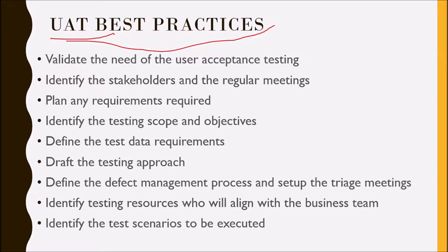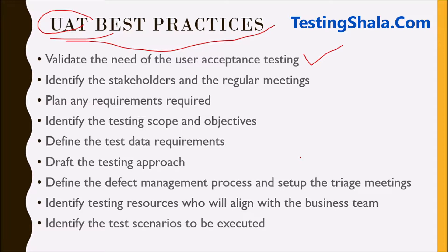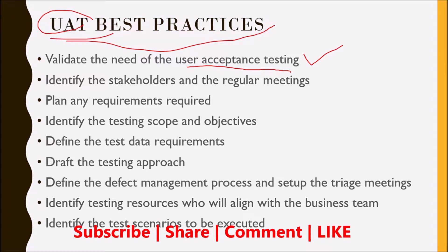The first best practice is we need to validate the need for user acceptance testing. Not every project requires UAT. It needs to be validated with the stakeholders — end users, business users, or product management — to confirm whether there is a real requirement for the UAT phase. If they say yes, then we will move on to clearly define what are the things we should do in UAT.